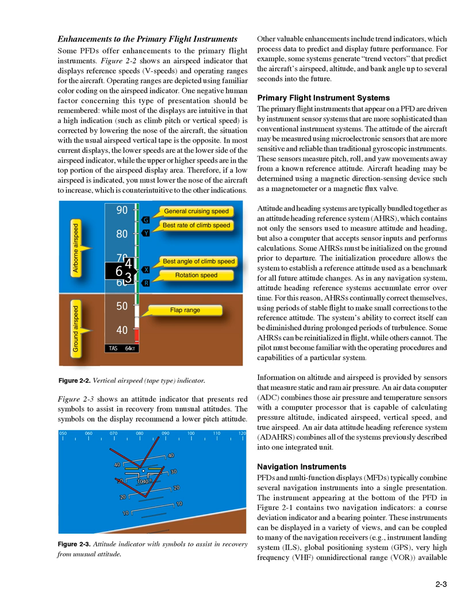Information on altitude and airspeed is provided by sensors that measure static and RAM air pressure. An air data computer, ADC, combines those air pressure and temperature sensors with a computer processor that is capable of calculating pressure altitude, indicated airspeed, vertical speed, and true airspeed. An air data attitude heading reference system, ADARS, combines all of the systems previously described into one integrated unit.